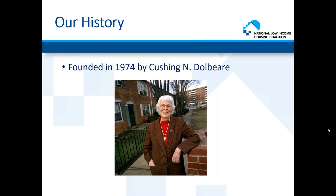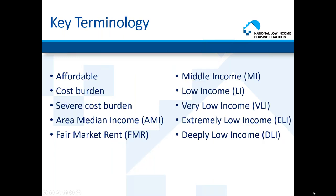There are some key terms we use frequently. When we say 'lowest incomes,' we mean households at 30% or less of area median income (AMI), a value calculated by HUD for every region used to determine income eligibility for federal programs. Middle income is 81% or more of AMI; low income is 51–80%; very low income is 31–50%; and extremely low income means living at or below 30% of AMI or the federal poverty guidelines.